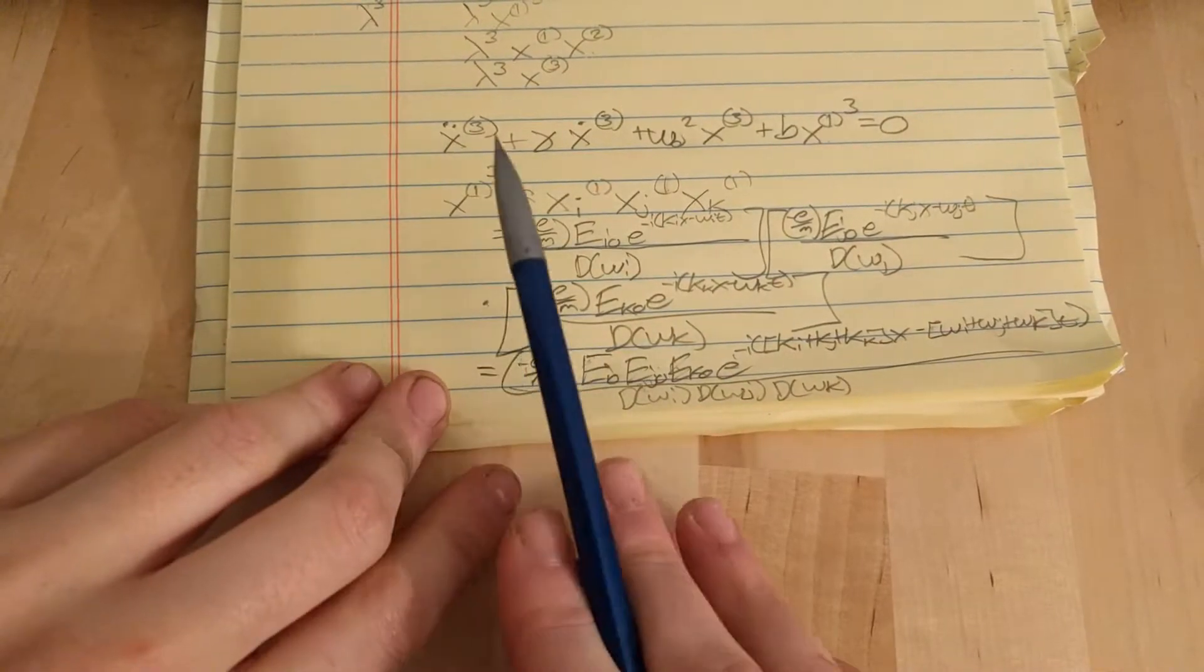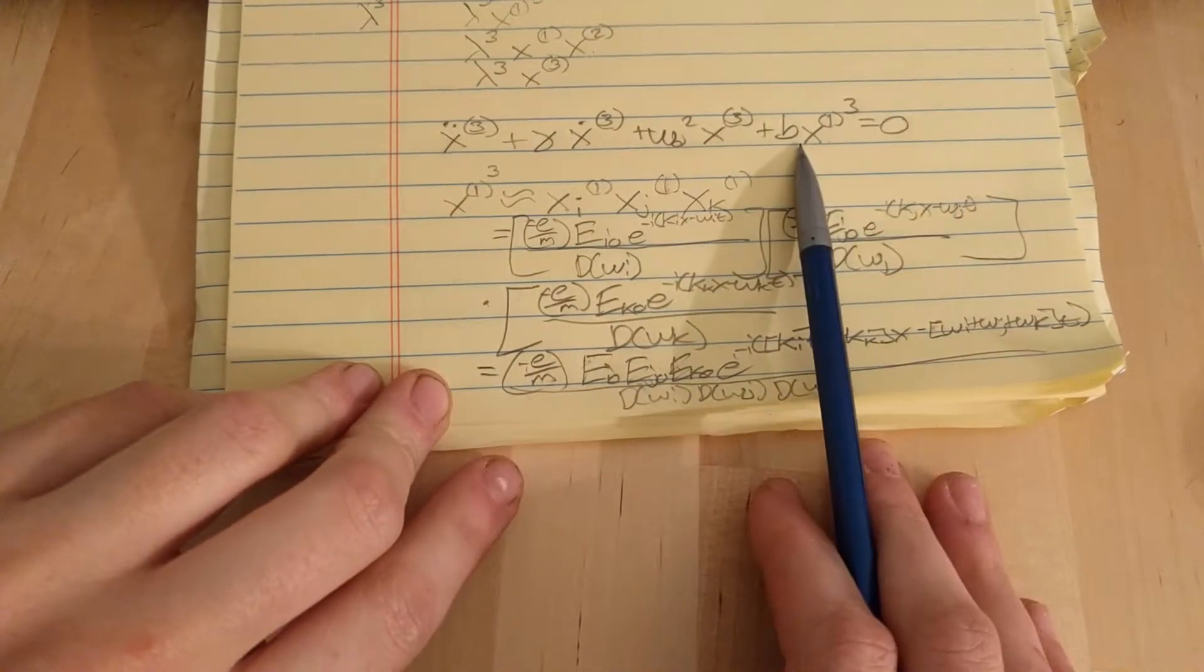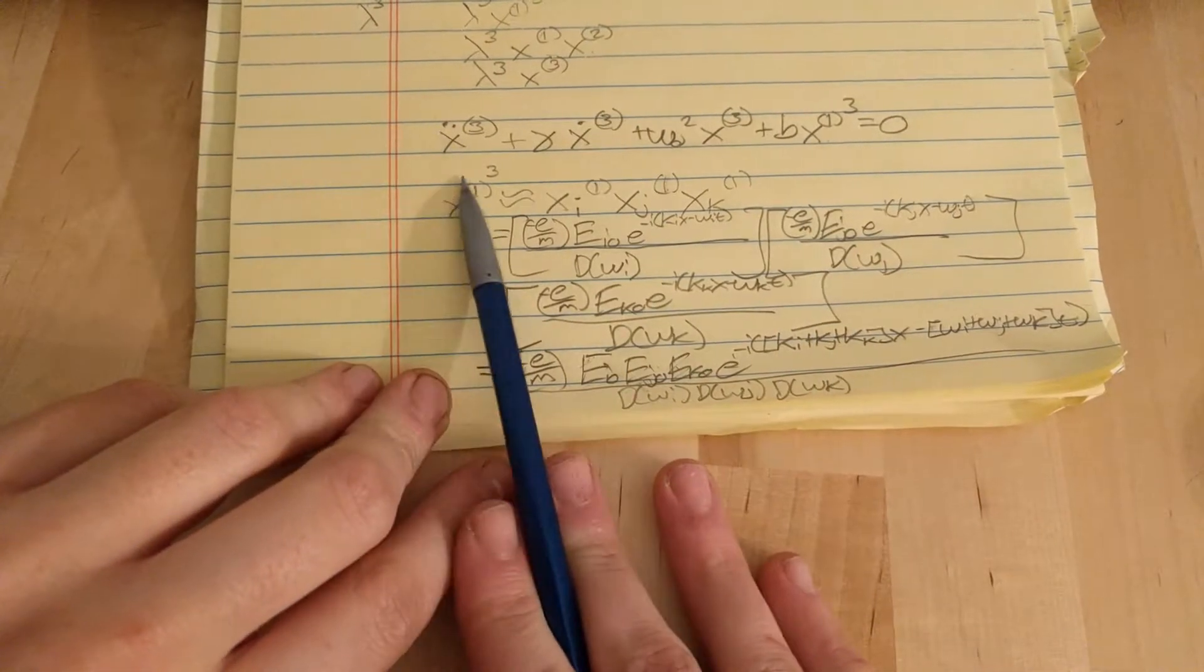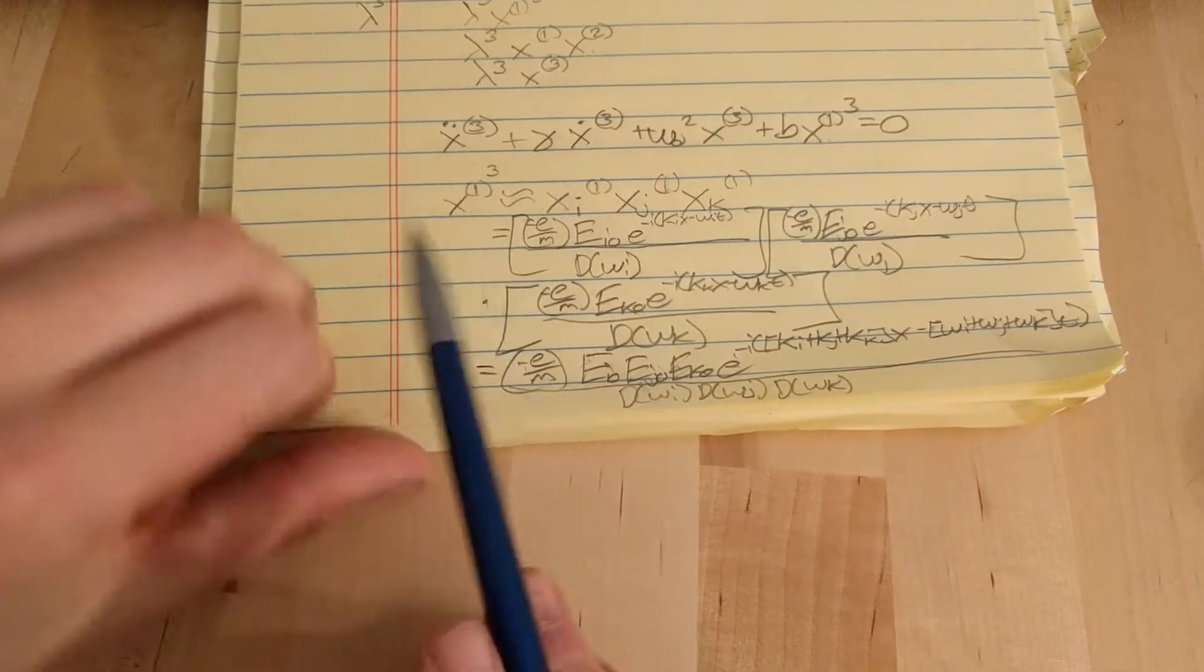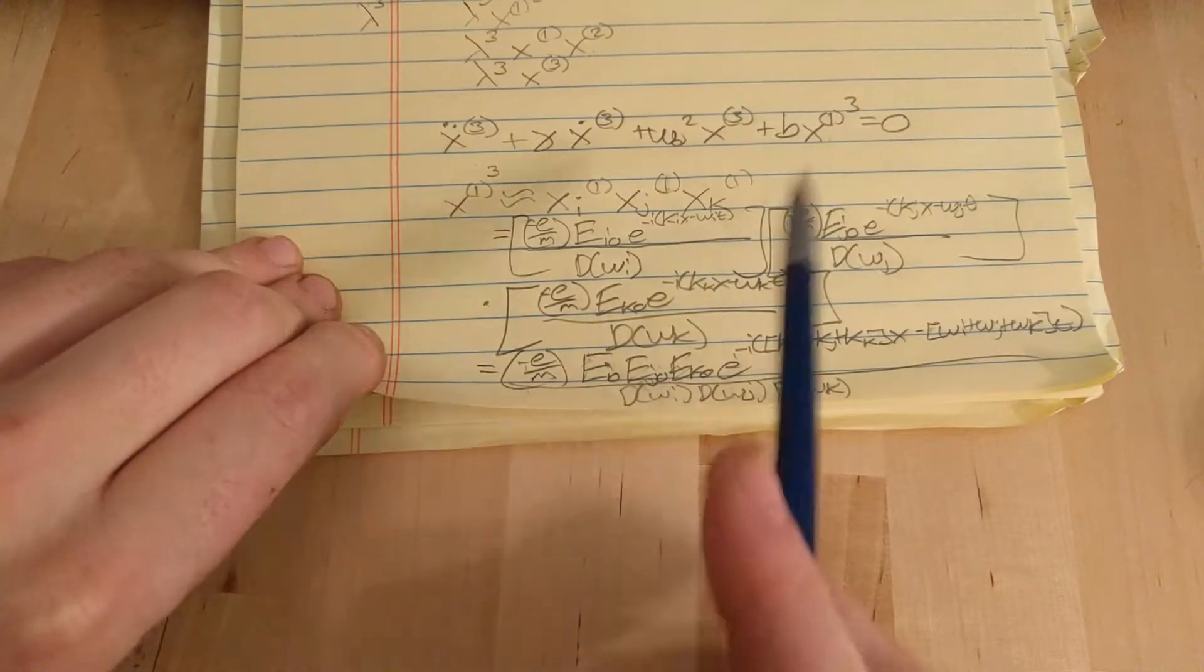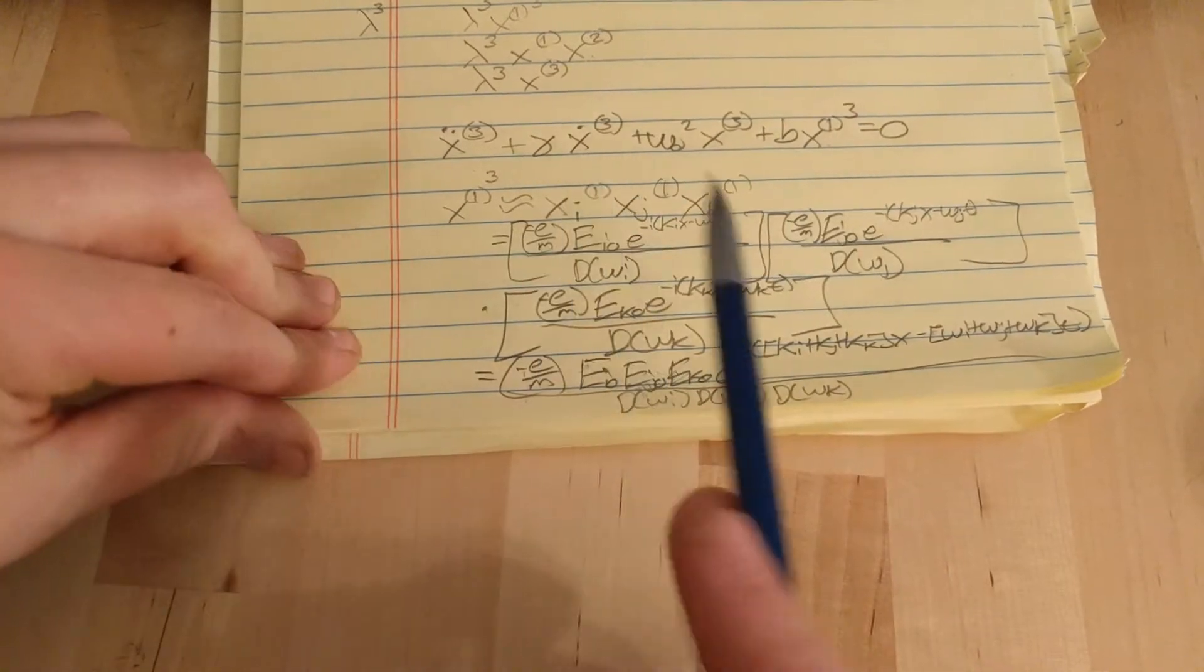Okay, so the next thing we do, is we just plug this x1 cubed in there, and we assume a form for x3. So, let's plug x1 cubed in here first, and move it to the right side of the equation.